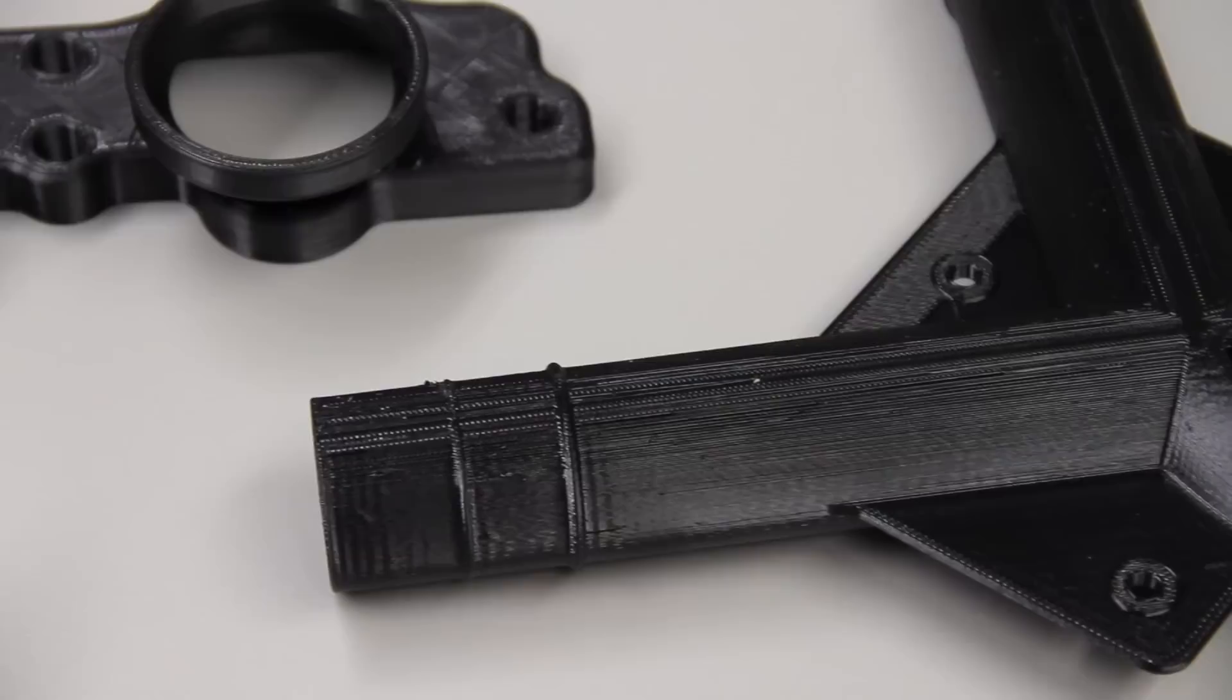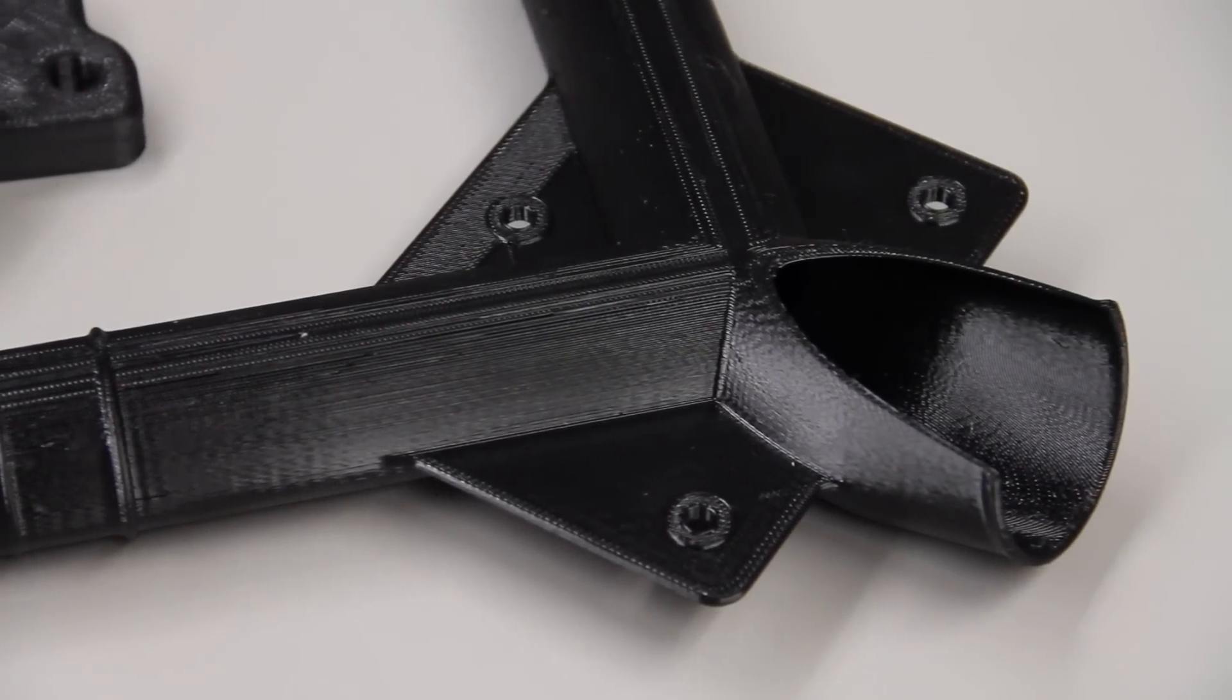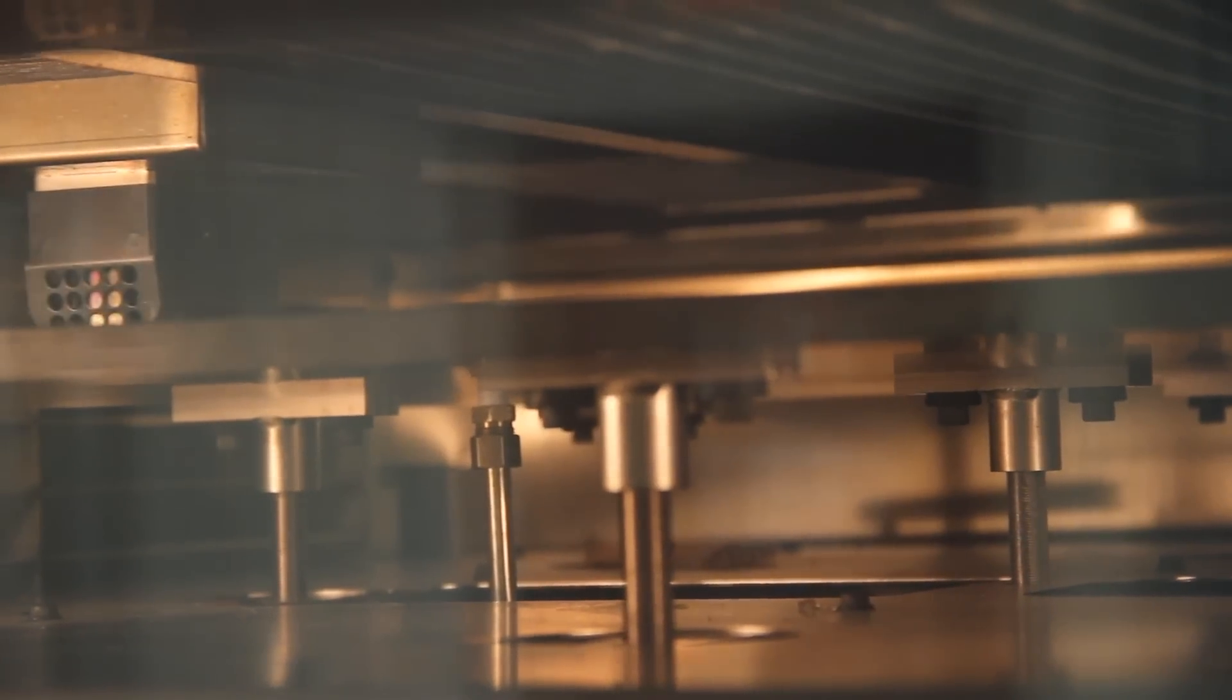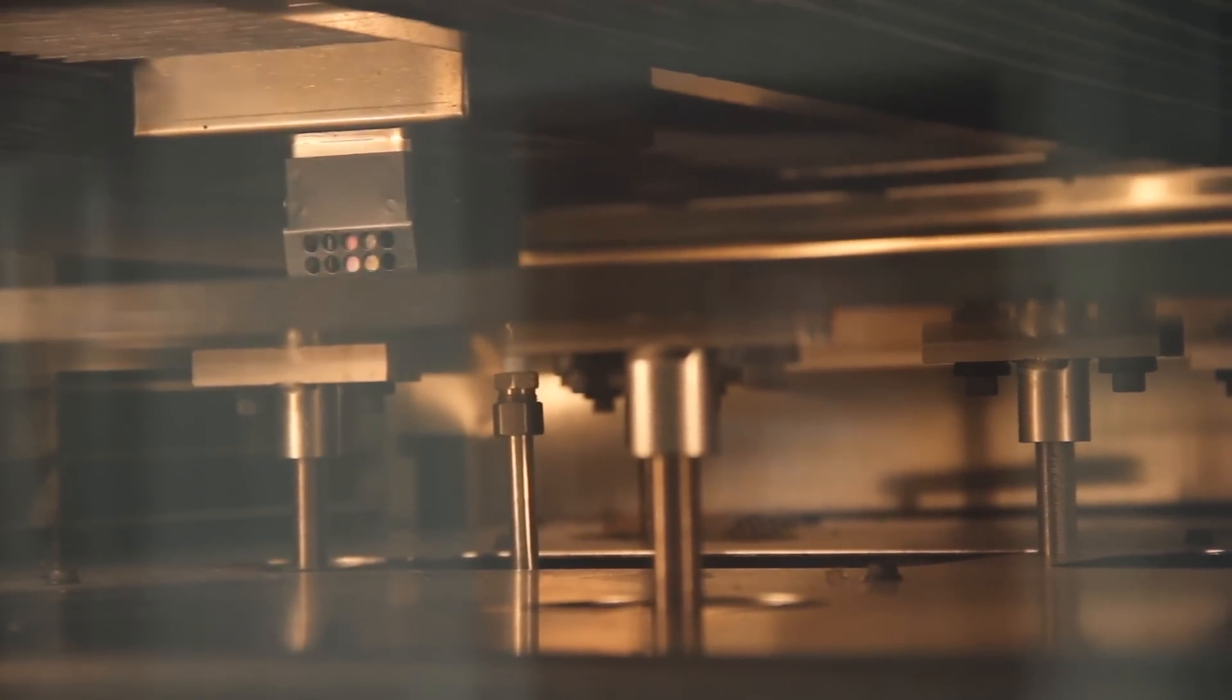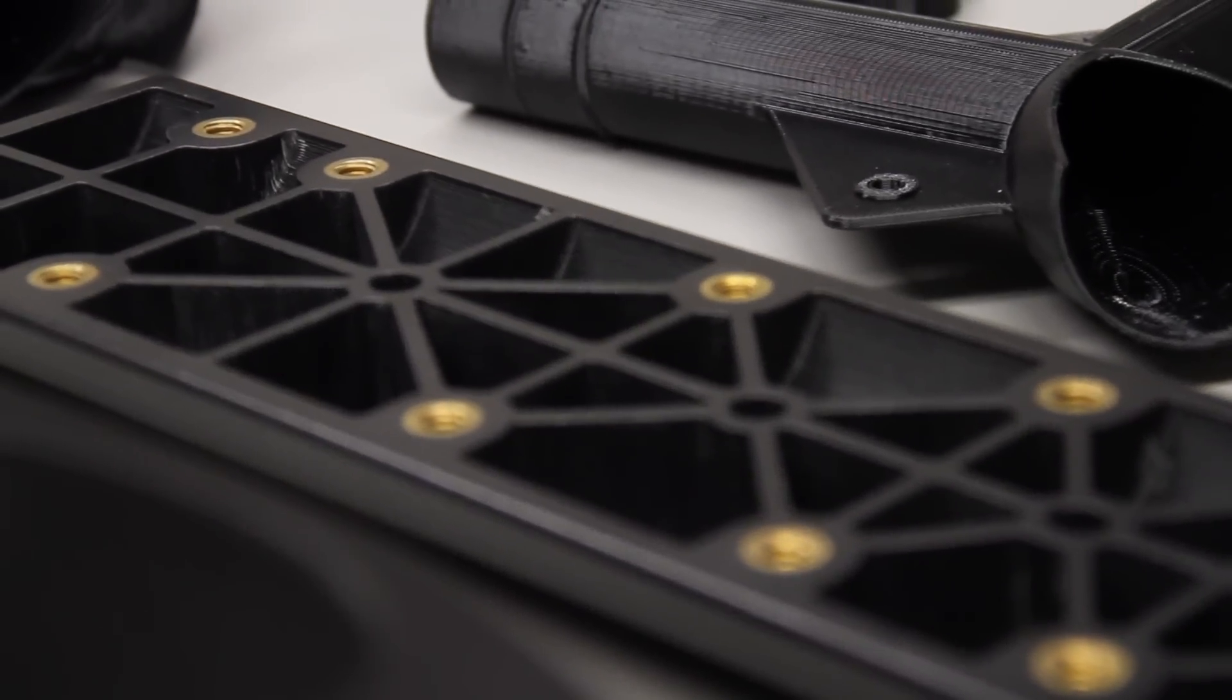Black Ultem parts are commonly requested by end users because they're looking to combine the superior part performance—specifically the mechanical, chemical, and thermal performance of Ultem 9085—with a part that has uniform black aesthetics throughout.